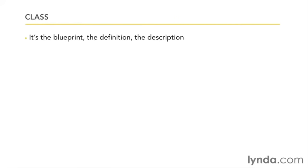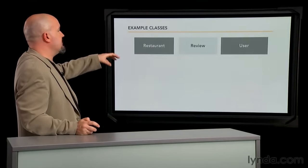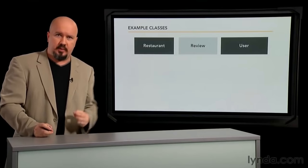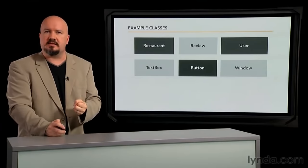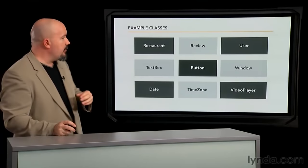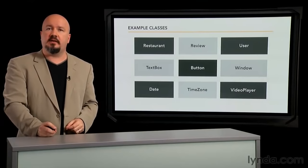A class is a blueprint. It's an idea. It's a description, a definition. It describes what something is, but it isn't the thing itself. It's a well-defined idea, like say a blueprint for a house. Now classes will exist for different parts of your program. Say if you were writing a restaurant review website, you might create classes that represent a restaurant and a review or a user. Classes could also represent visual parts of your program, things like text box and button and window. And they can also represent invisible things, like dates and times. Anything that can be a well-defined idea. Now a lot of languages come with many classes already defined, even advanced things like video player classes. And you can also define your own.